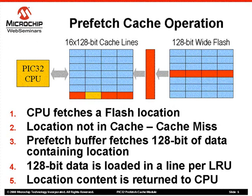Let's see how the Prefetch Cache Module operates. In Step 1, the CPU fetches a specific flash location — it could be for an instruction or constant data. Step 2: assume this is the first time the CPU is accessing this location, meaning the cache does not contain that particular location. This condition is called a Cache Miss. Step 3: the Cache Logic instructs the Prefetch Buffer to read the flash memory, and the Prefetch Logic will wait a predetermined number of cycles before reading. Step 4: once 128 bits of data are loaded in the Prefetch Buffer, it is copied to an available cache line. The Cache Controller uses a least-recently-used algorithm to determine which cache line to use. Step 5: now that the requested location is in the cache, the Cache Module returns the content to the CPU.